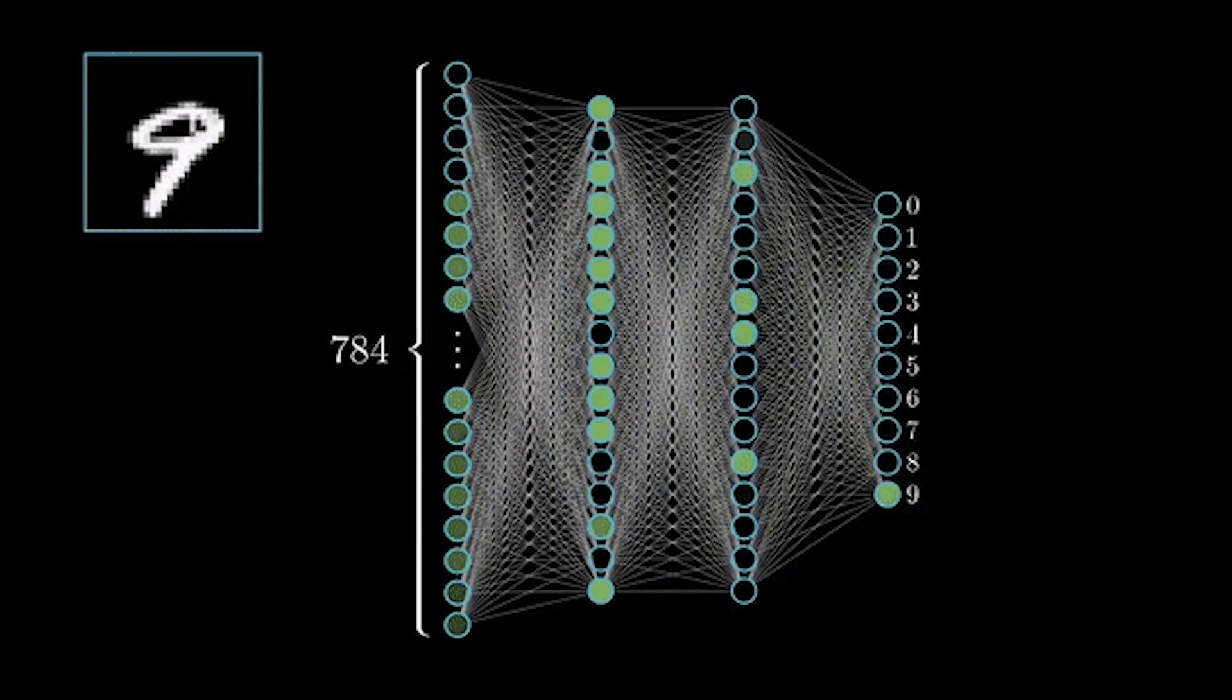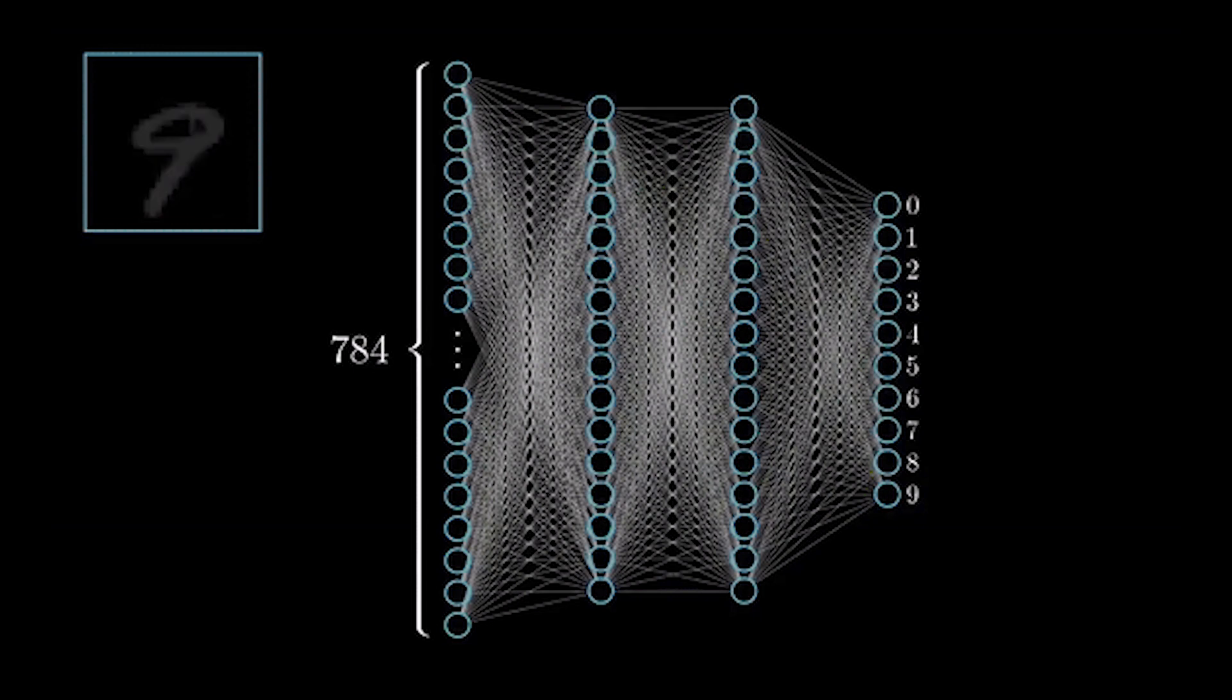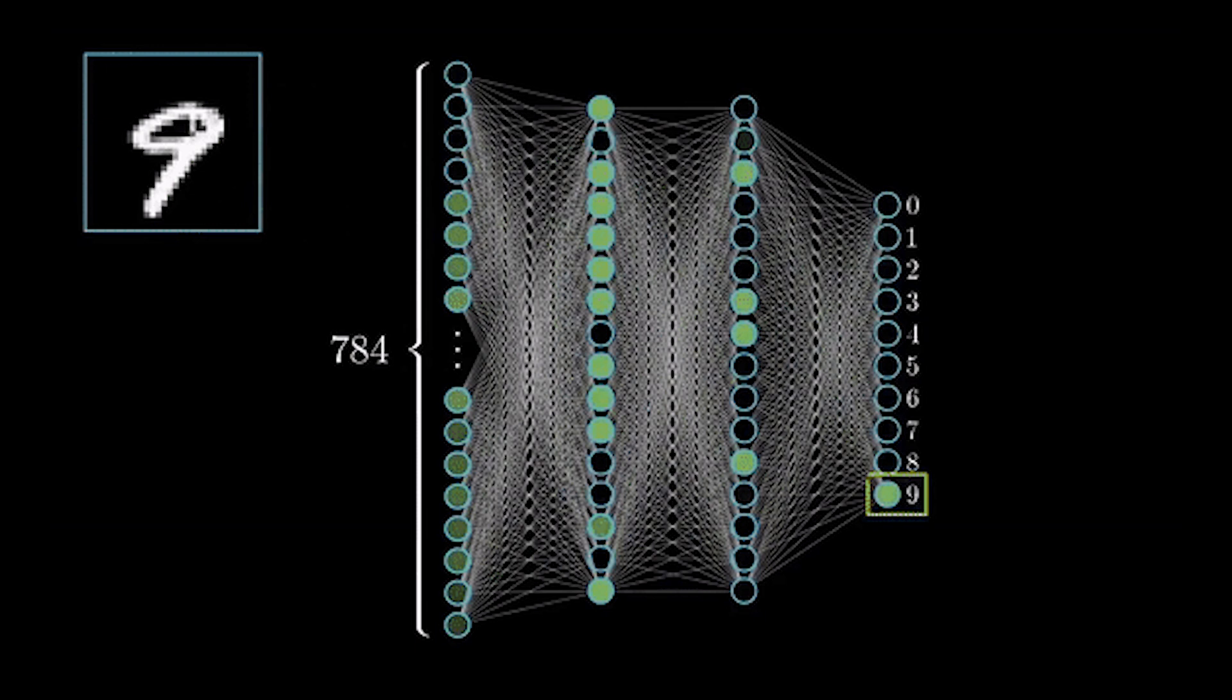It then passes that information that is processed to the next hidden layer, which then passes it to an output that assigns the number nine to it. At each of those stages, the weights are being adjusted, which are demonstrated by the lines, which in turn are adjusting its calculations so that it can analyze that picture and tell you what it actually is.